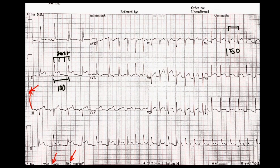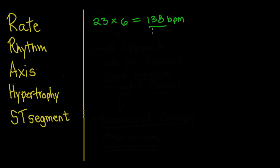Overall, we went from about 100 to 150 based on the boxes, but the average looking at all the beats would be 23 times 6, which is about 138. So the average ventricular rate is about 138 beats per minute.